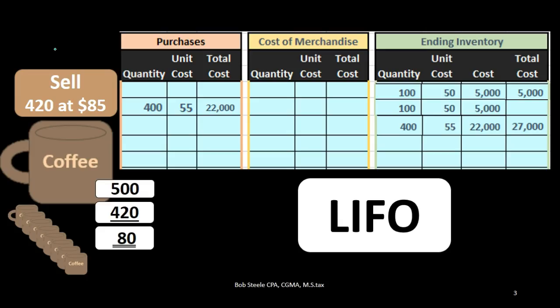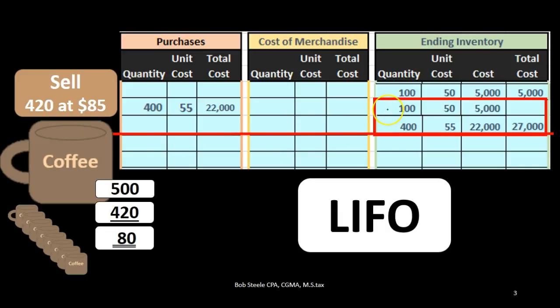If we take a look at an example — we have inventory, we're selling these coffee mugs, and we're going to sell 420 mugs at $85. That $85 is the sales price, not the cost. If we want to know the cost, we go to our worksheet. We see that we purchased 100 units at $50 for $5,000 of ending inventory, and another 400 units at $55 for $22,000. If we sold 420 units, the question is: what's the cost of those 420 units — the $50 or the $55?